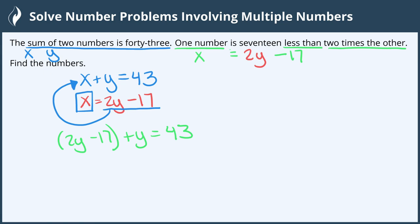So let's combine like terms, which gives us 3Y minus 17 equals 43. Add 17 to both sides to isolate the variable, and we're left with 3Y equals 60. Now we can solve for Y by dividing both sides by 3, and since I ran out of room, we'll come up here.